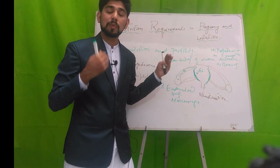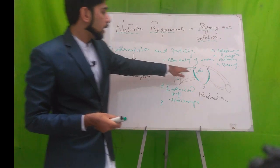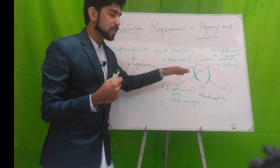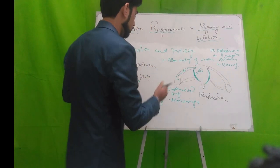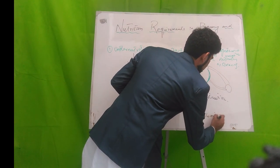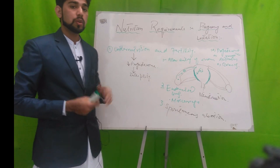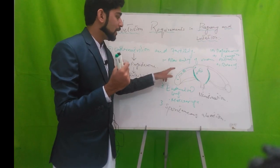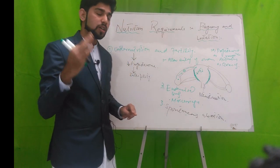The third point is that progesterone decreases uterine contractions during pregnancy to prevent spontaneous abortion. So to summarize: progesterone (1) allows entry of the ovum into the uterus, (2) maintains the endometrial lining, and (3) decreases uterine contractions.